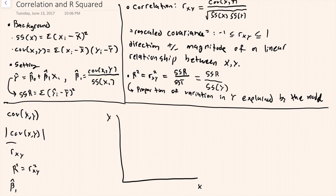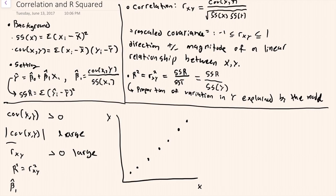Lastly, I'll consider a situation where these points fall almost on a perfect line. The covariance would be greater than zero, and the magnitude would be relatively large. The correlation would also be greater than zero and relatively large. The proportion of variation explained would be relatively large. And the slope coefficient b1 would be greater than zero.